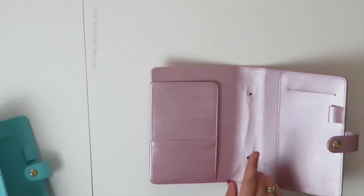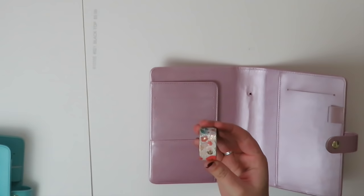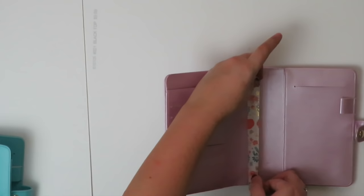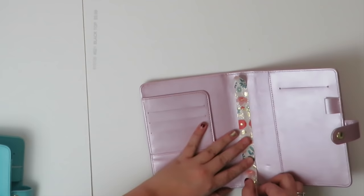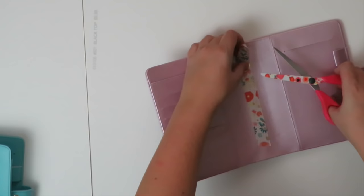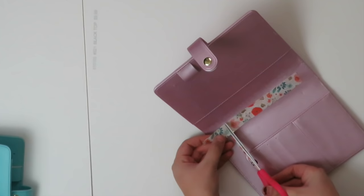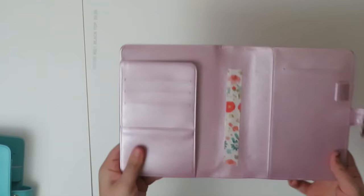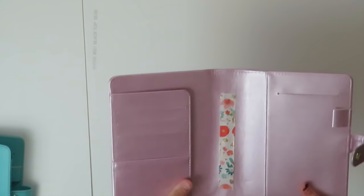So this is washi tape I got from Michaels. I think it's super cute. It's thick enough that it's going to cover both of those holes. So then I would just start at the top, stick it, pull down, go over that second one. I'm going to take my scissors, cut, stick that side down, and then take these scissors and I'm going to cut up top. So here you have the cheaper version of Me and My Big Ideas Deluxe Cover.